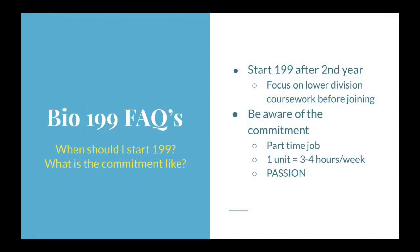When should you start Bio 199 and what is the commitment like? Generally, students are advised to join after their second year, after completing lower division courses like OChem and Bio 98 and 99, which form the foundation for upper division coursework. Keep in mind that research is a part-time job. One unit equals three to four hours per week, so four units equals roughly 16 hours per week. Be sure to discuss with your professor how many hours you can commit, and most importantly, make sure you're genuinely passionate about the lab you're joining.